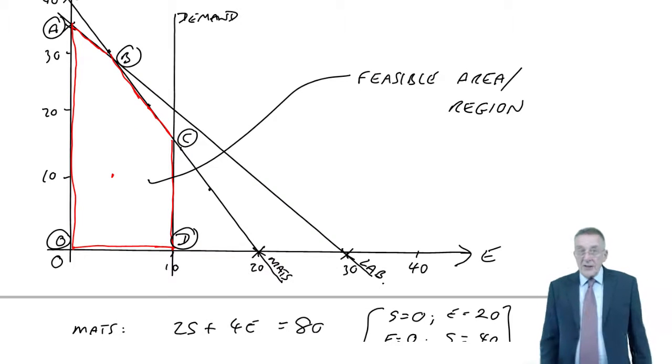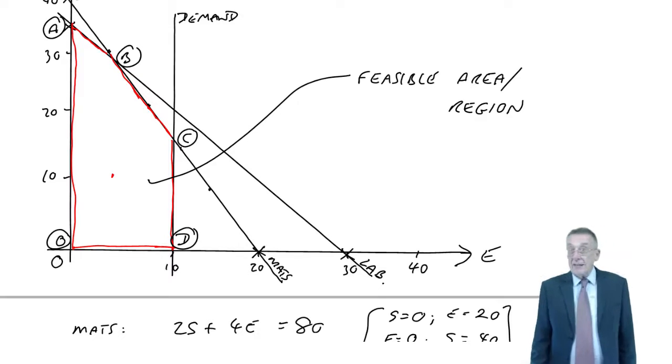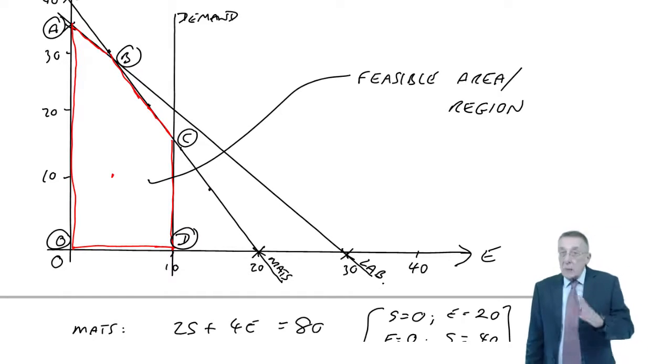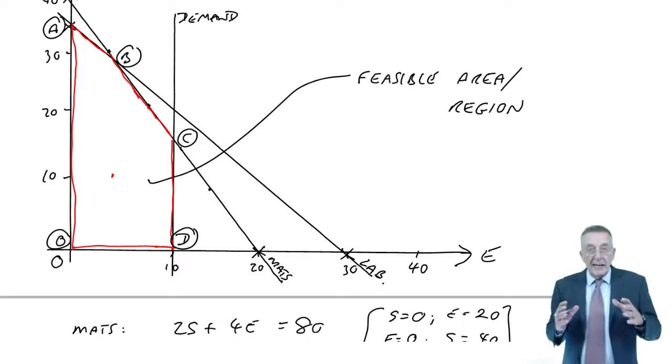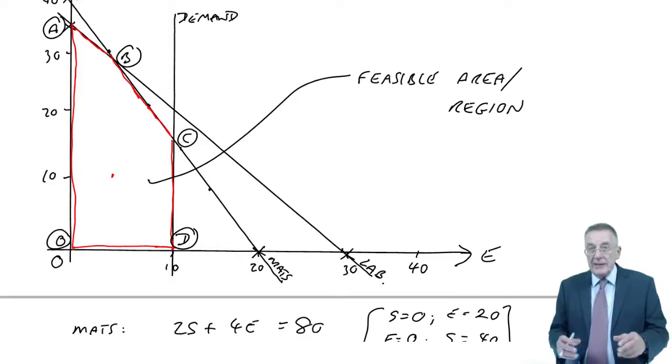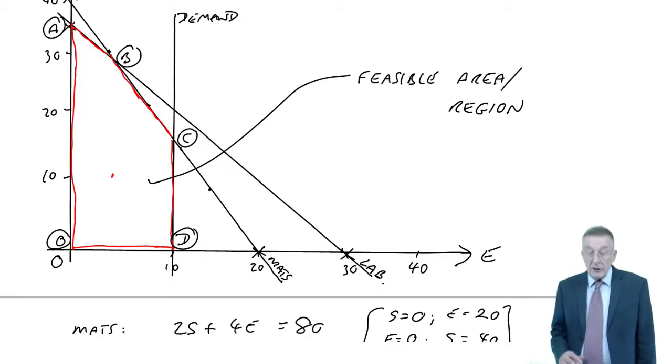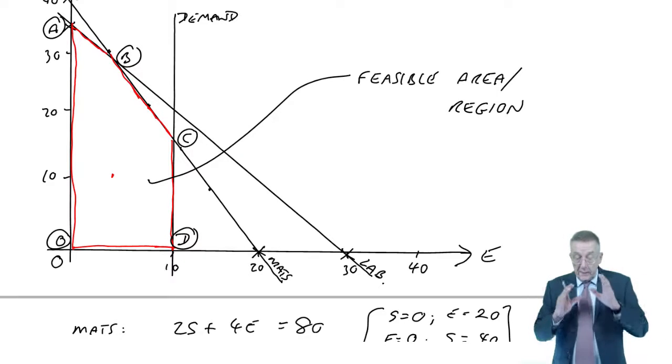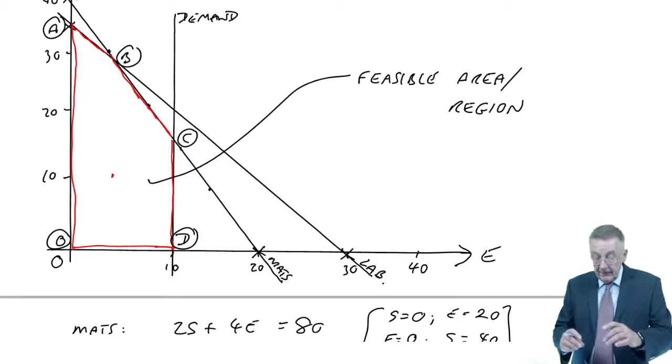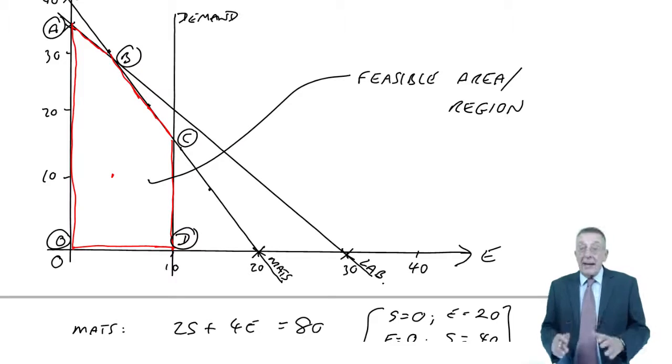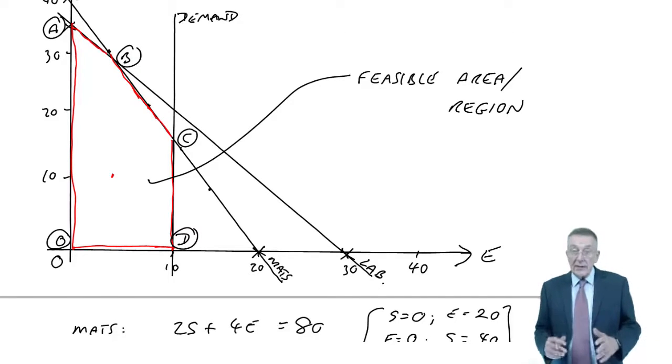This is the third lecture on limiting factors, linear programming. I hope you remember where we're up to, that we set up the equations for the constraints of our objective, and we put the constraints on a graph. So any answer must be inside, or on the edge of, that red area, the feasible region.